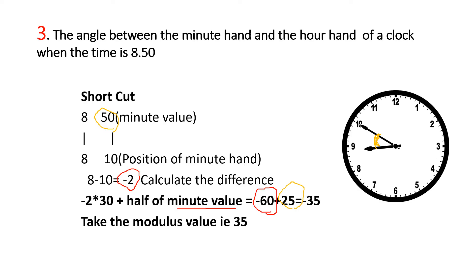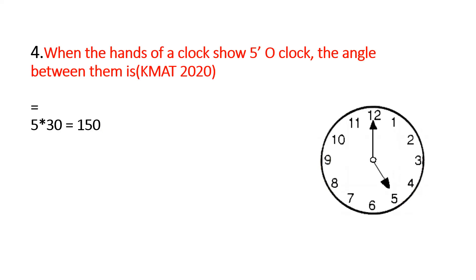That will be the final answer. This is the third category of problem — when the hands of a clock show five o'clock. The angle at 12 to 1 is 30 degrees, 1 to 2 is 30 degrees, 2 to 3 is 30 degrees, 3 to 4 is 30 degrees, and 4 to 5 is 35 degrees.